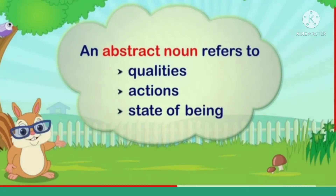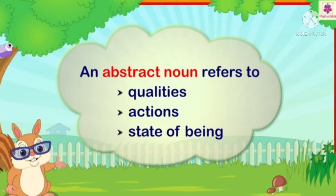An abstract noun refers to qualities, actions, and state of being. State of being का मतलब क्या है? मतलब किसी चीज का होना, किसी स्थिति में होना, किसी person का.